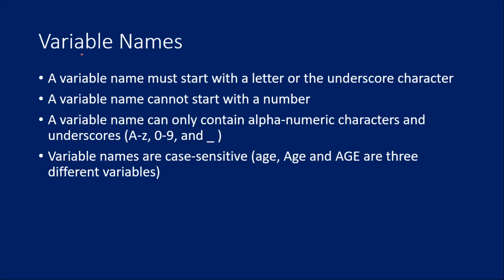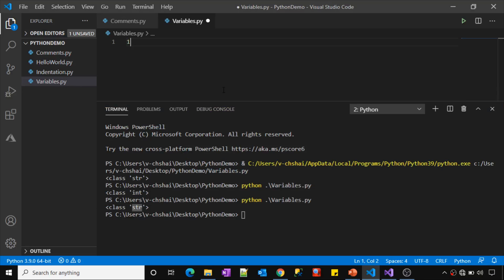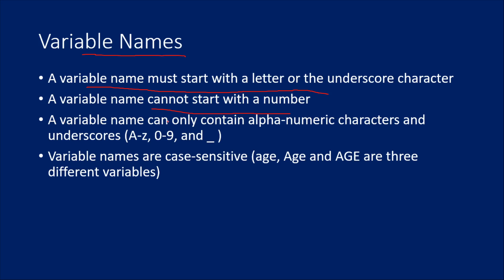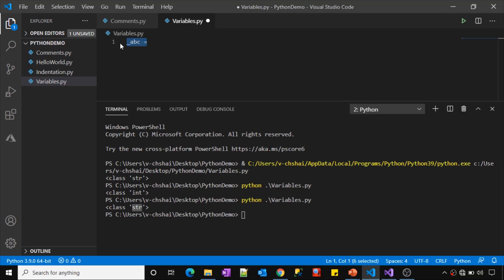Now let's discuss the rules for creating variable names in Python. Variable names must start with a letter or underscore — you should not start with a number, so something like '1abc' is incorrect syntax. Variable names can contain only alphanumeric characters and underscores. No other special characters are allowed — for example, 'abcd_xyz' is valid but 'abcd@xyz' is not.